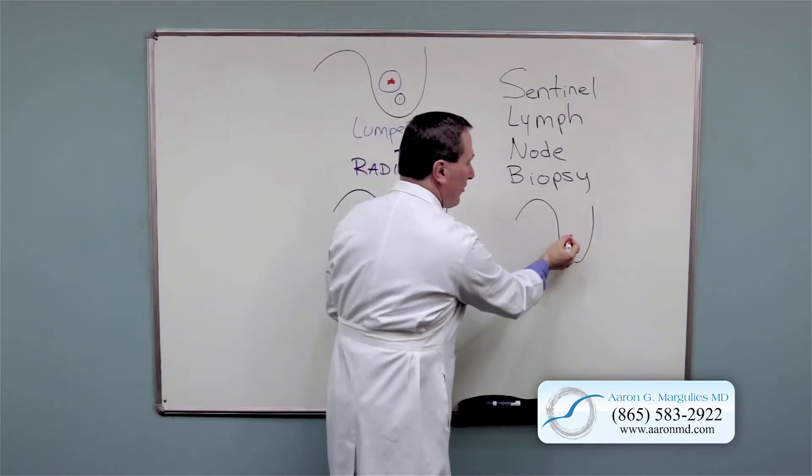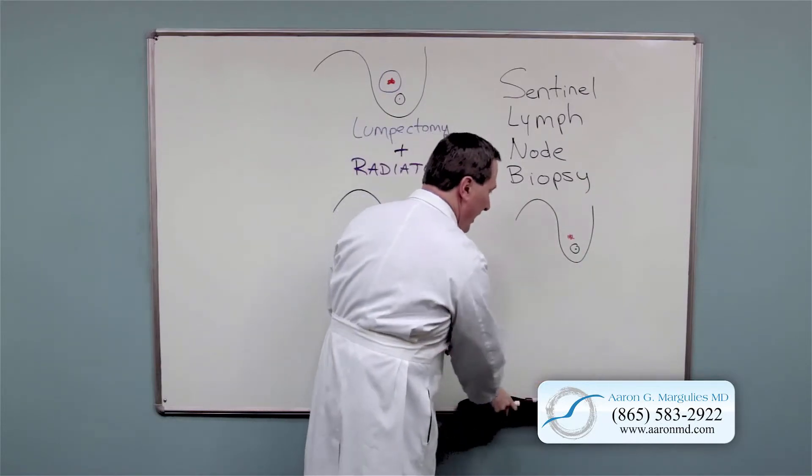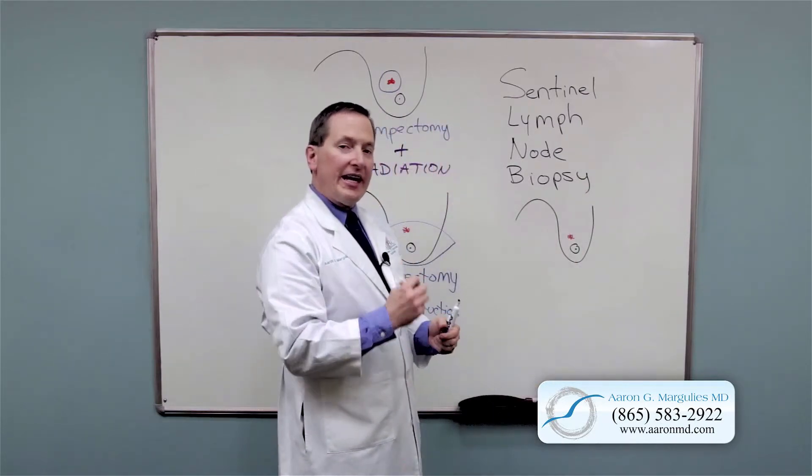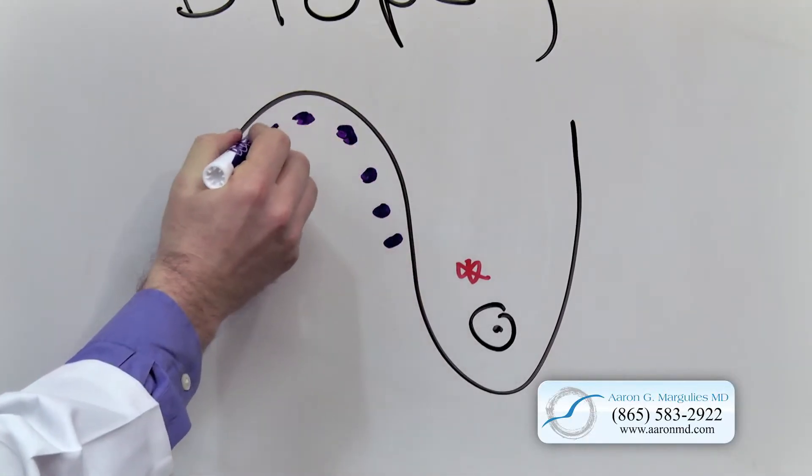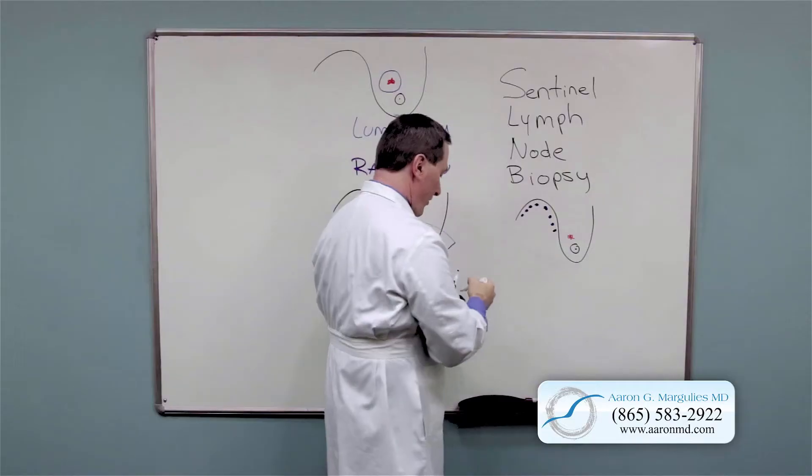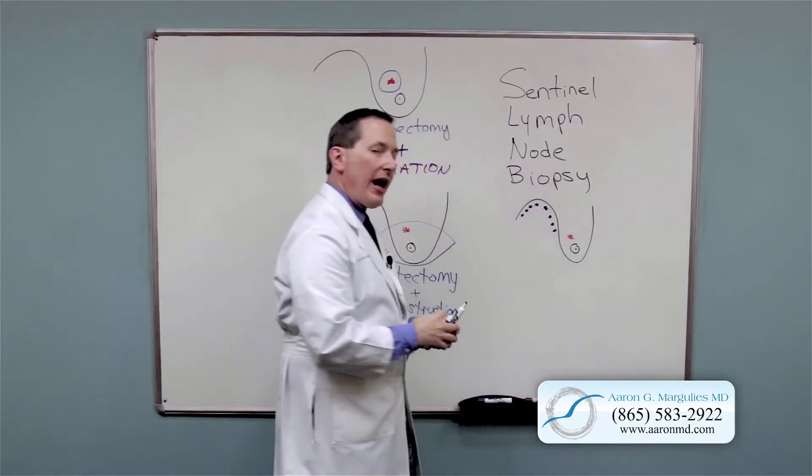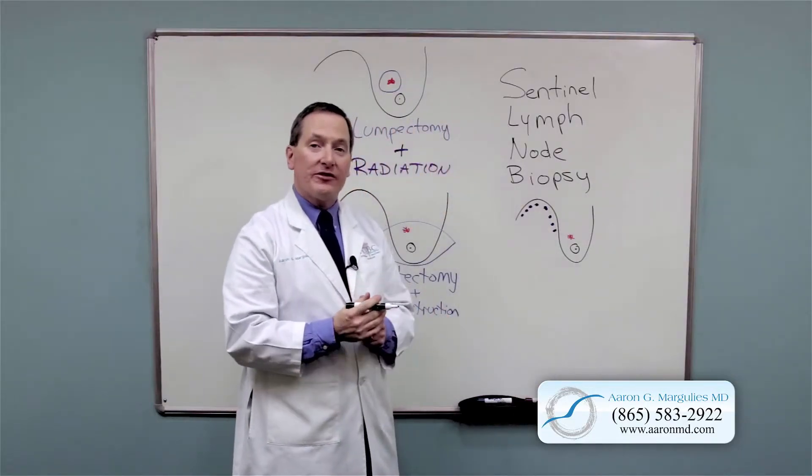So we find the cancer in your breast, and we're interested if that cancer has spread to the lymph nodes underneath your arm. To identify those lymph nodes, there's a lymphatic pathway in your breast through which the cancer is going to follow.